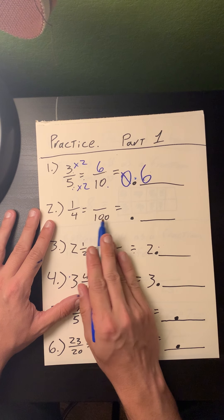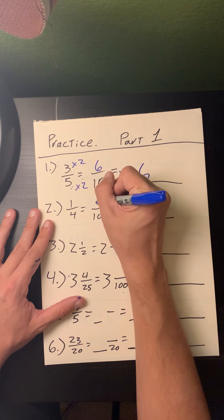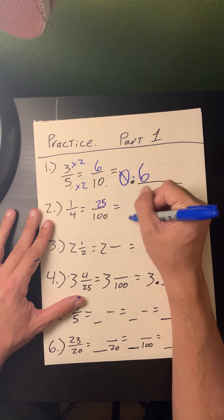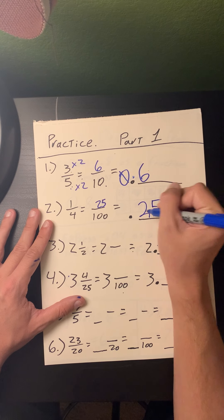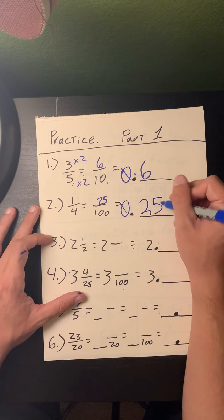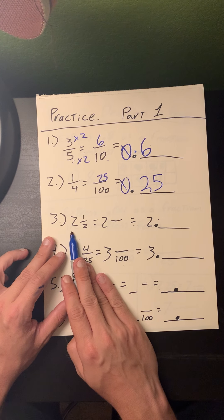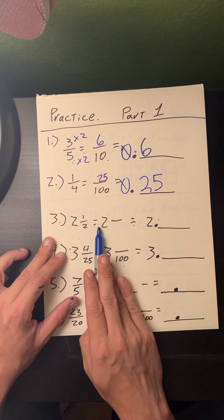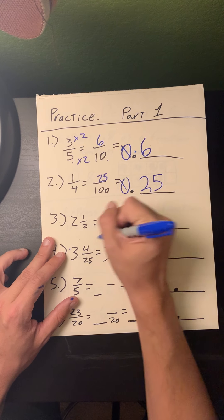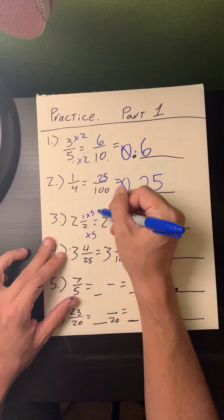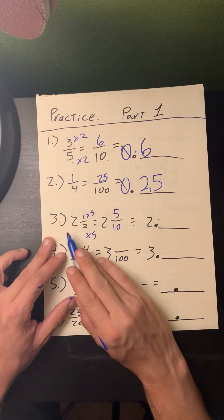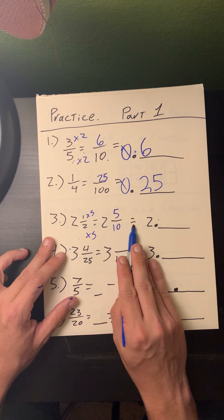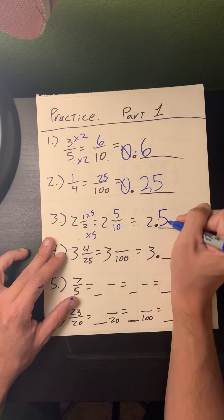Problem number two: one quarter equals how many hundredths? A quarter is worth twenty-five cents, or twenty-five of a hundred. So the decimal is 0.25. Problem number three: the mixed number 2 and one-half — 2 times 5 equals 10, so one times 5 equals 5. Two and one-half is equal to 2 and five-tenths, written as the decimal 2.5.